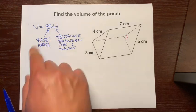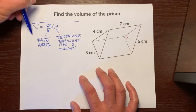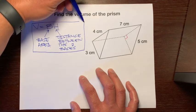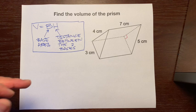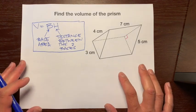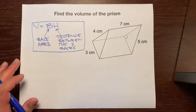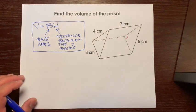We're going to use this formula that you should have written in your notebooks and highlighted and made a power card on so you could memorize this for the rest of your life. Volume of prism—let's first find the base area.